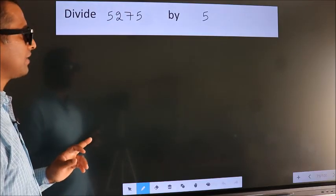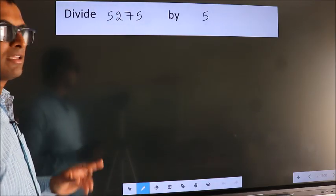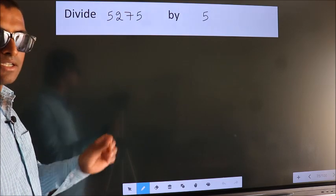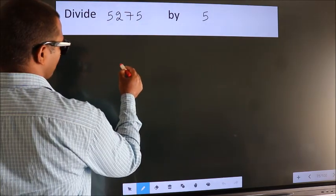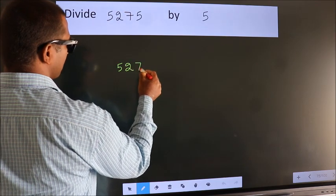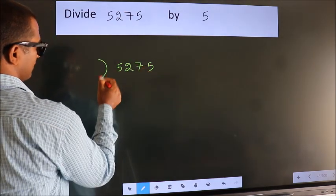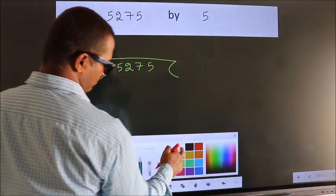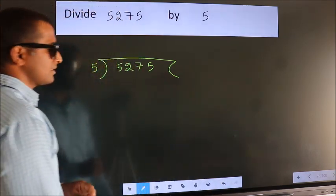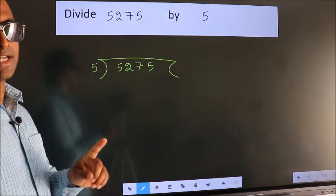Divide 5275 by 5. To do this division, we should frame it in this way: 5275 here, 5 here. This is your step 1.